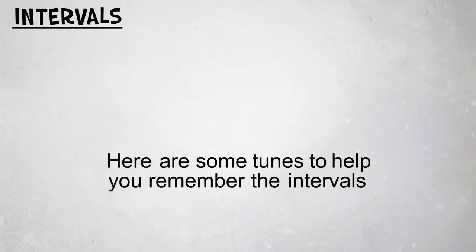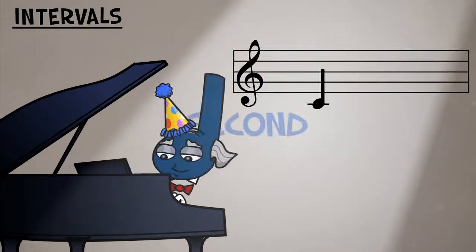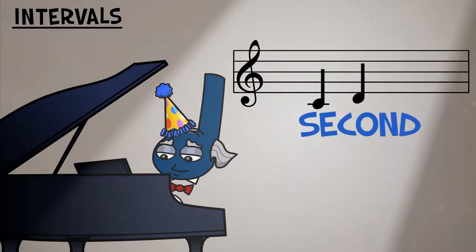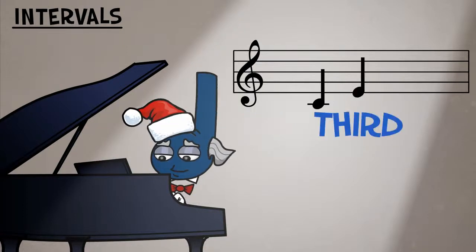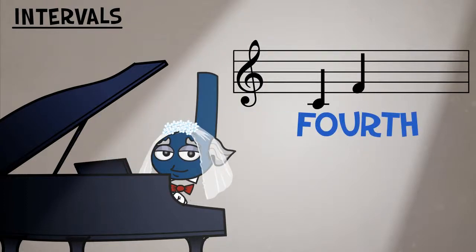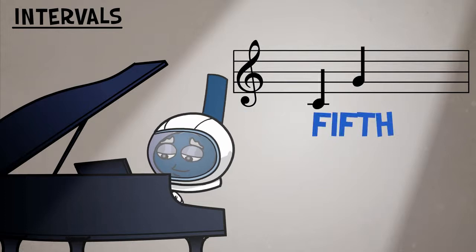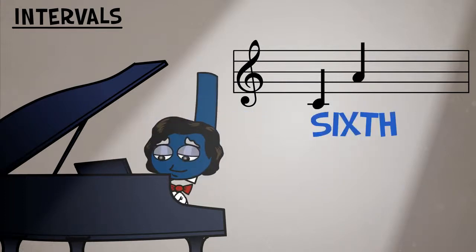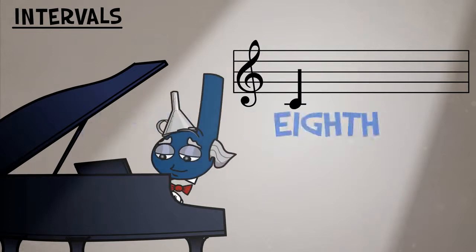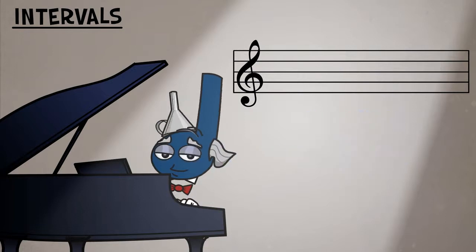Here are some tunes to help you remember the intervals. Happy birthday to you. Have yourself a merry little Christmas. Here comes the bride. Twinkle, twinkle. Chopin's Nocturne in Eb major. Somewhere over the rainbow, first note is eighth, then seventh.